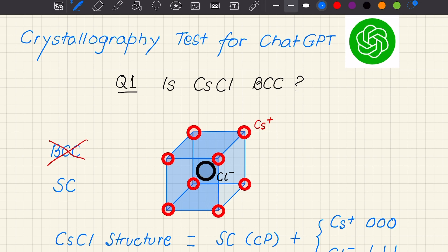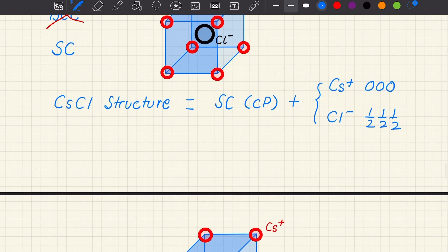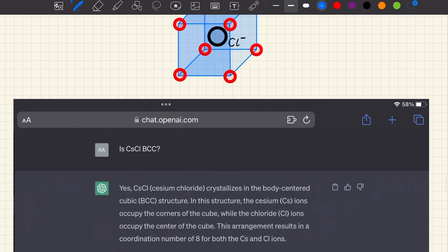So we have understood the question and the answer. Let's put this question now to ChatGPT. Exactly the same question asked to ChatGPT: is cesium chloride BCC? And the answer it gives is yes, cesium chloride crystallizes in the body centered cubic structure. So ChatGPT has failed our test, did not get the answer right.